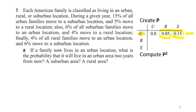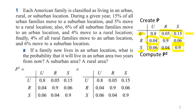For suburban families, six percent move to an urban location and four percent move to a rural location, so 90 percent stay in the suburban area. For rural families, four percent move to an urban area, six percent move to suburban, and 90 percent stay in the rural area. This gives us our complete transition probability matrix P.